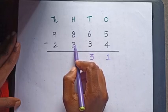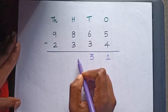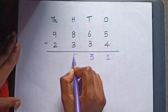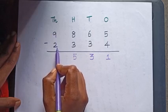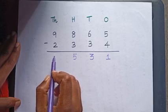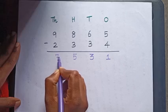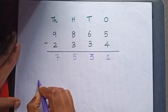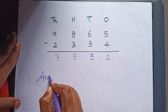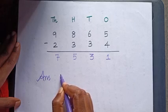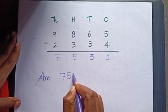8 minus 3 is equal to? Tell me. Yes, 5. 9 minus 2 is equal to? Tell me the answer. Yes, very good, 7. Therefore, the answer is 7,531.